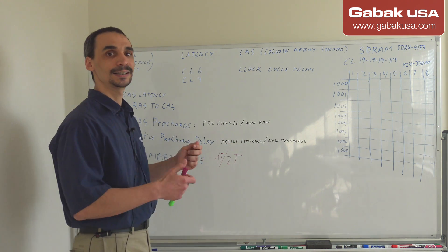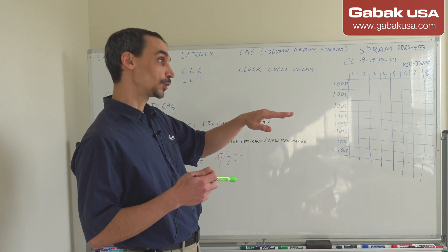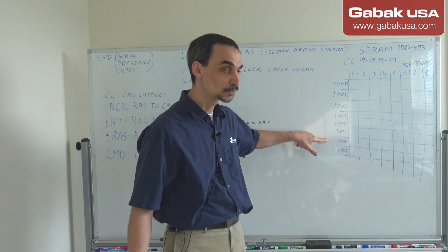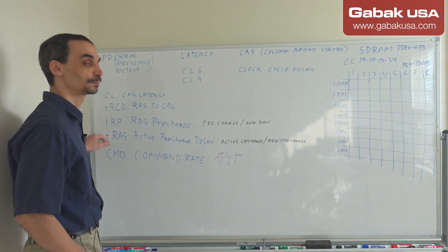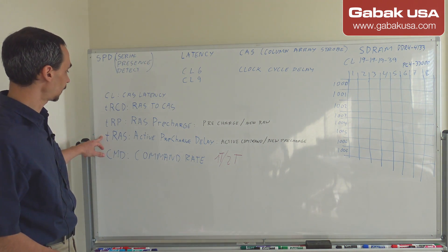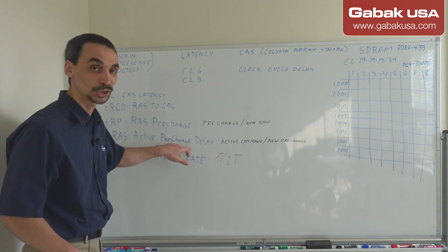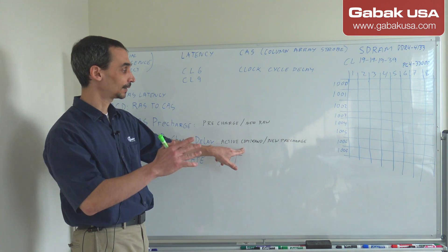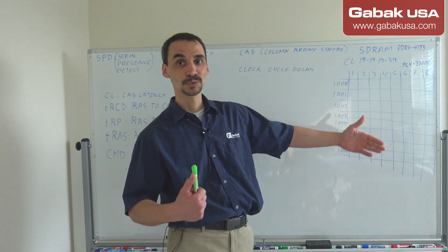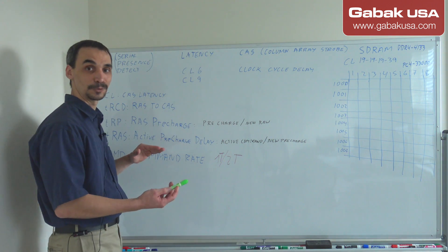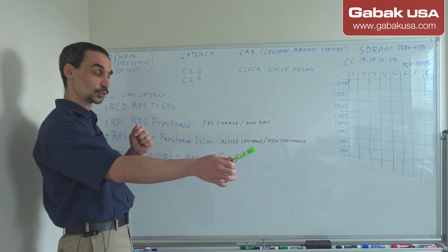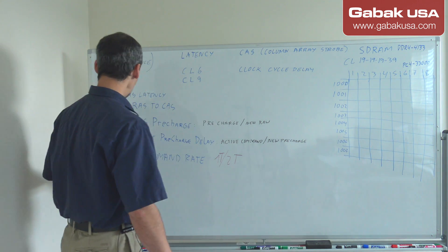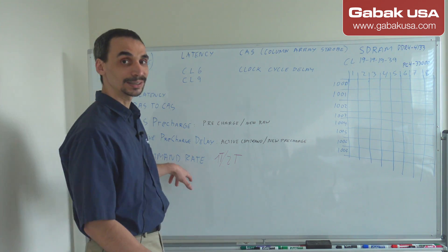Next is tRP — RAS Precharge — which is the time to precharge a line and access a new row. Basically it's the time between jumping from one row to the next so you can access the data. Then there is tRAS — Active to Precharge delay — which is the time between when the system issues an active command and when it precharges the next line.